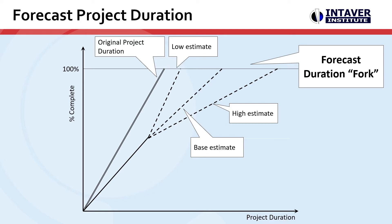When we're forecasting project duration with actuals, we'll see the original project duration or baseline — it could be cost as well — and then a line that varies off representing the actuals. We can also see a triangle that visualizes the low, base, and high estimates for the risk analysis, taking into account the actuals in the project.